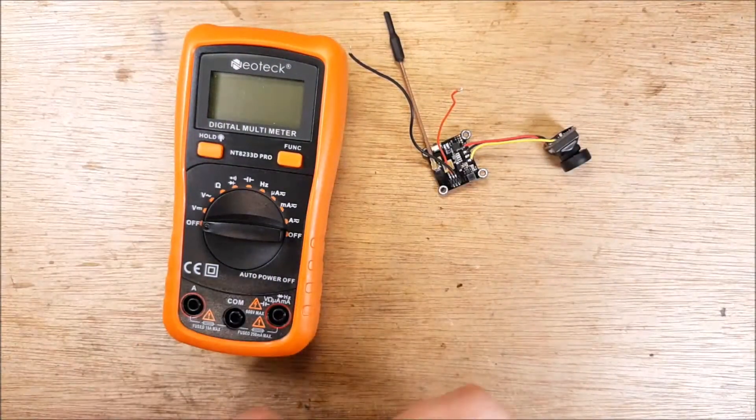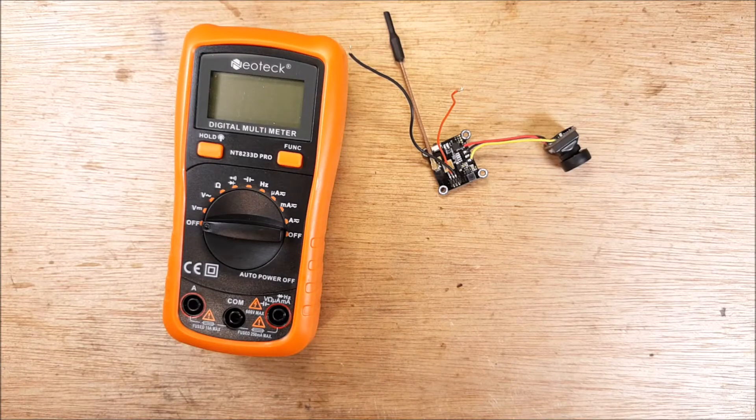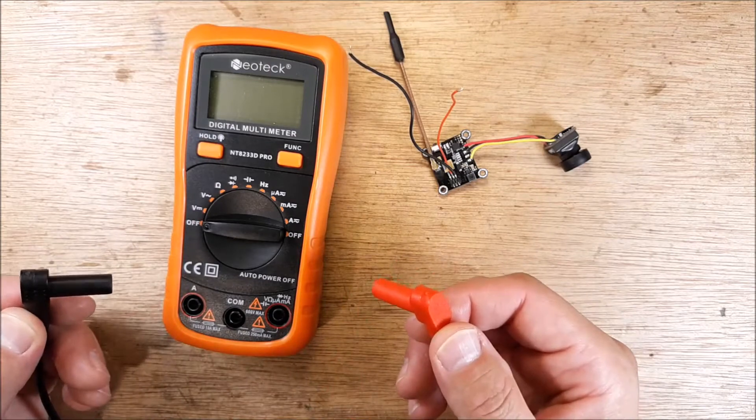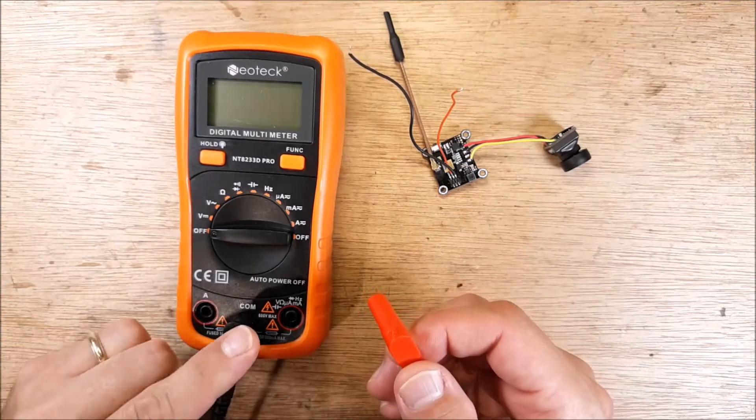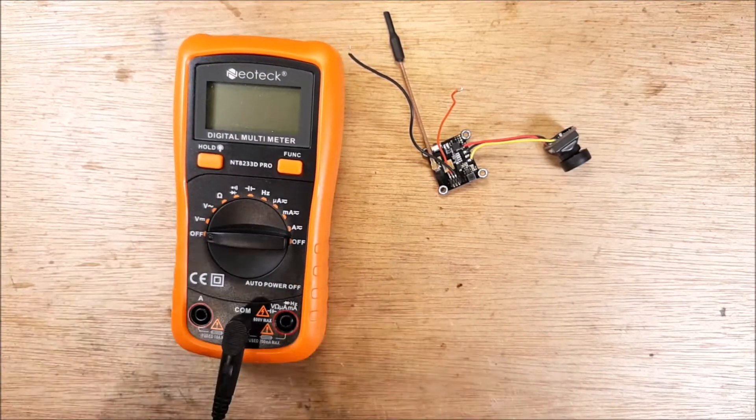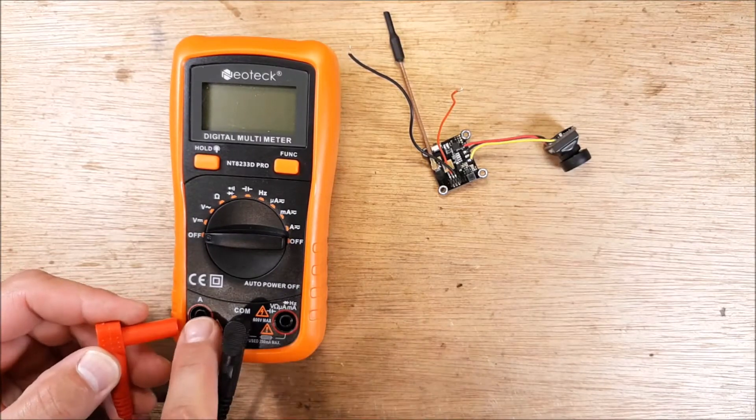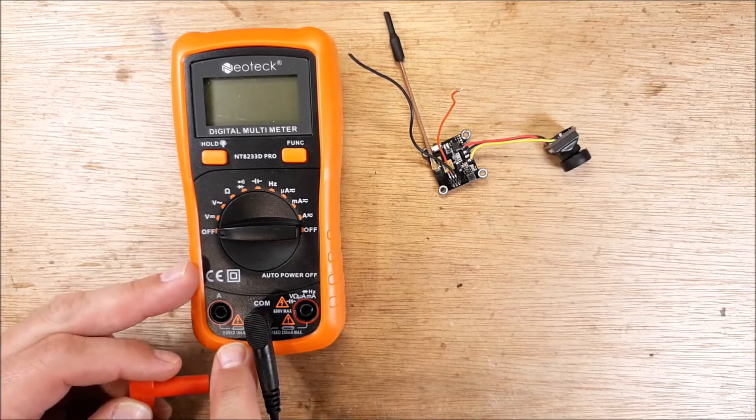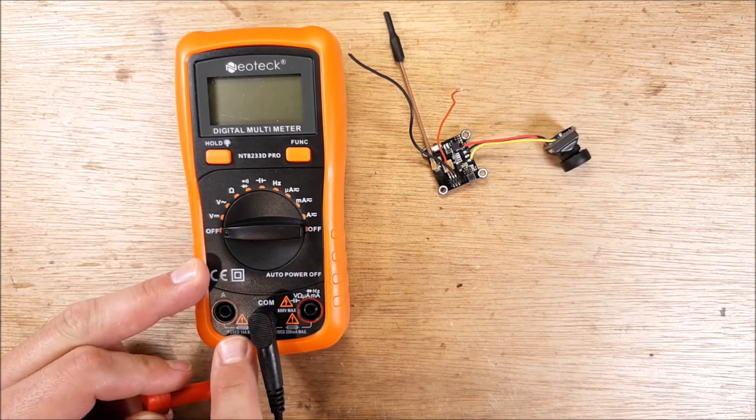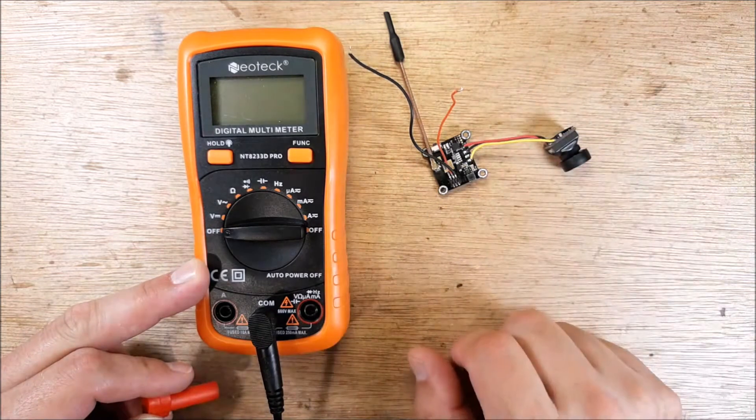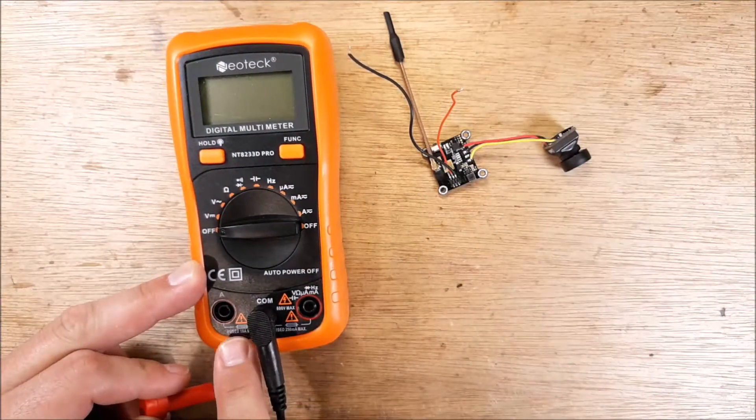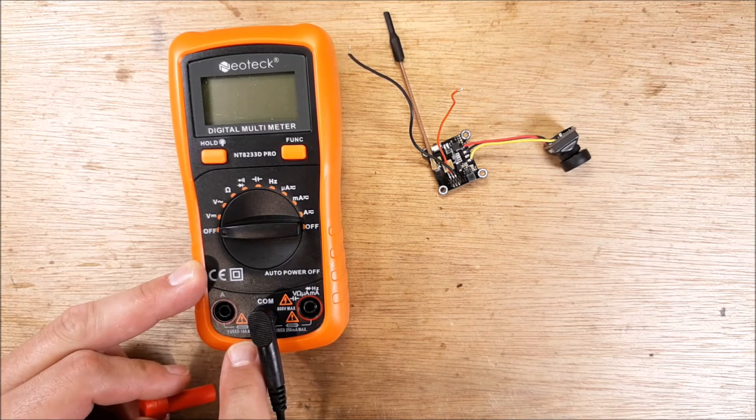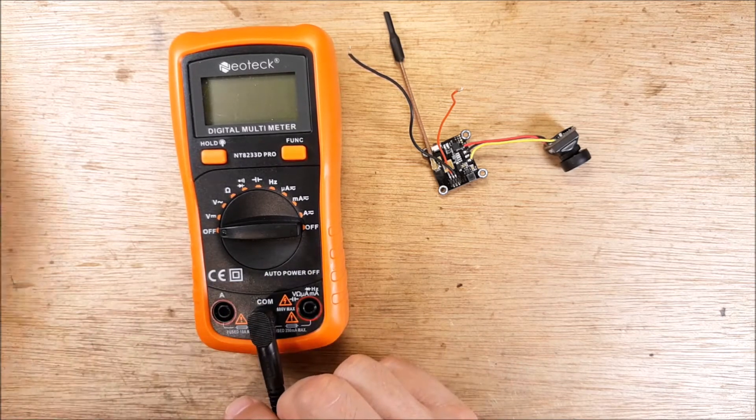We're going to plug in our test leads to our meter. The first place we want to do that is we want to find our common, plug them in, and then we're going to go over here to the amp. This is 10 amp max, remember you can't go over 10 amps. This obviously is not going to be 10 amps, but I do have quadcopters that I've done bench testing to that well exceed 10 amps.